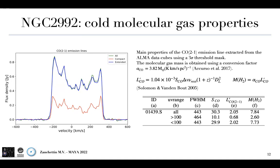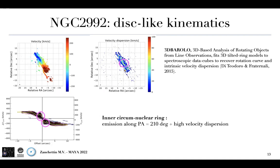We model the disc-like kinematics of the cold molecular gas by applying a 3D tilted ring model to our spectroscopic data cube using the software 3D-Barolo. I show the velocity gradient from the moment one map and the corresponding position-velocity diagram along the kinematic major axis. In the central part, we can detect some perturbation to the disc-like kinematics that are very evident also on the velocity dispersion map on compact scales, where the emission shows two spots in the center due to the presence of an inner circumnuclear ring.